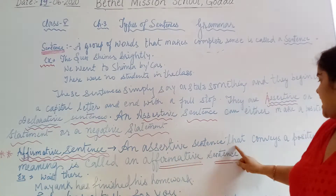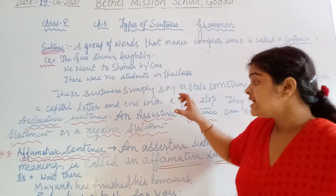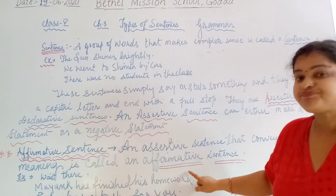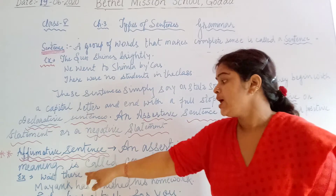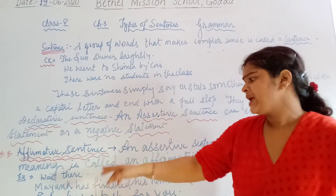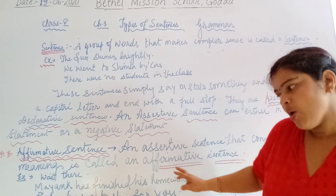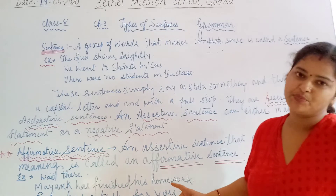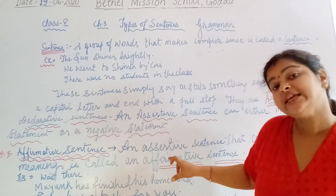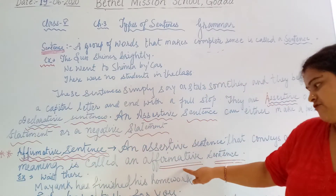An assertive sentence that conveys a positive meaning is called an affirmative sentence. For example: 'Wait there' — that means it is a positive order. 'Mayank has finished his homework' — it is very clear that Mayank had already finished his homework. 'Reacha has a task for you' — meaning Reacha has given you some task and you have to do it. Those assertive sentences having a positive meaning are called affirmative sentences.